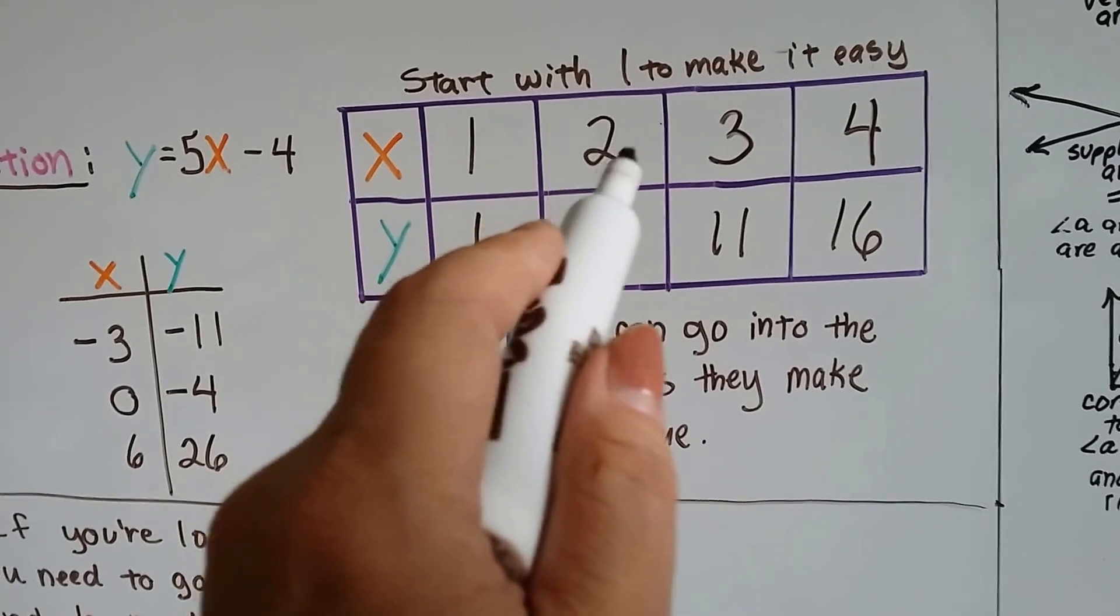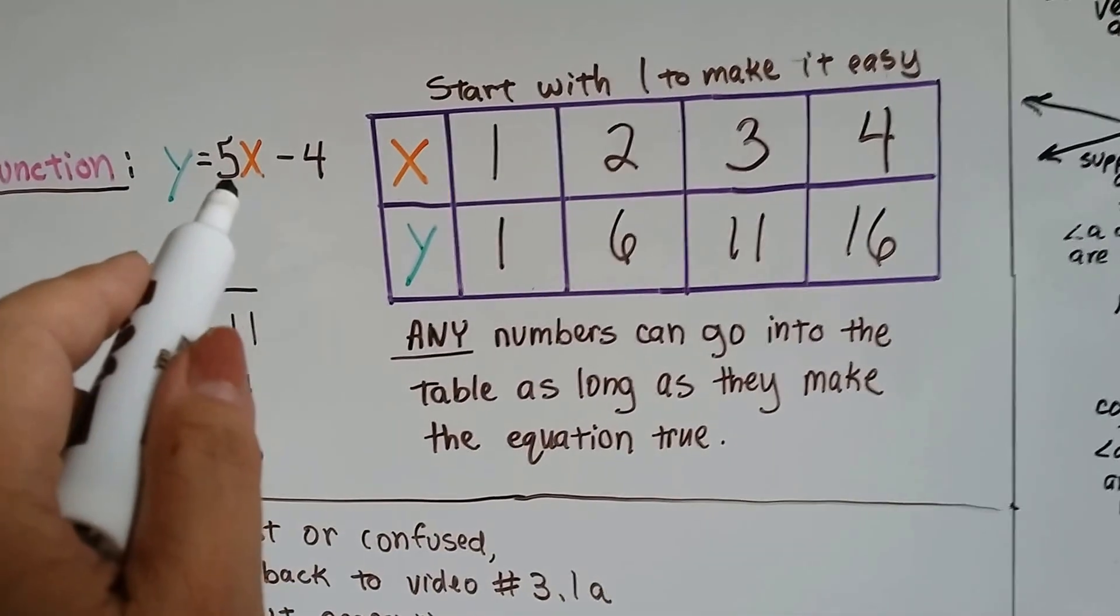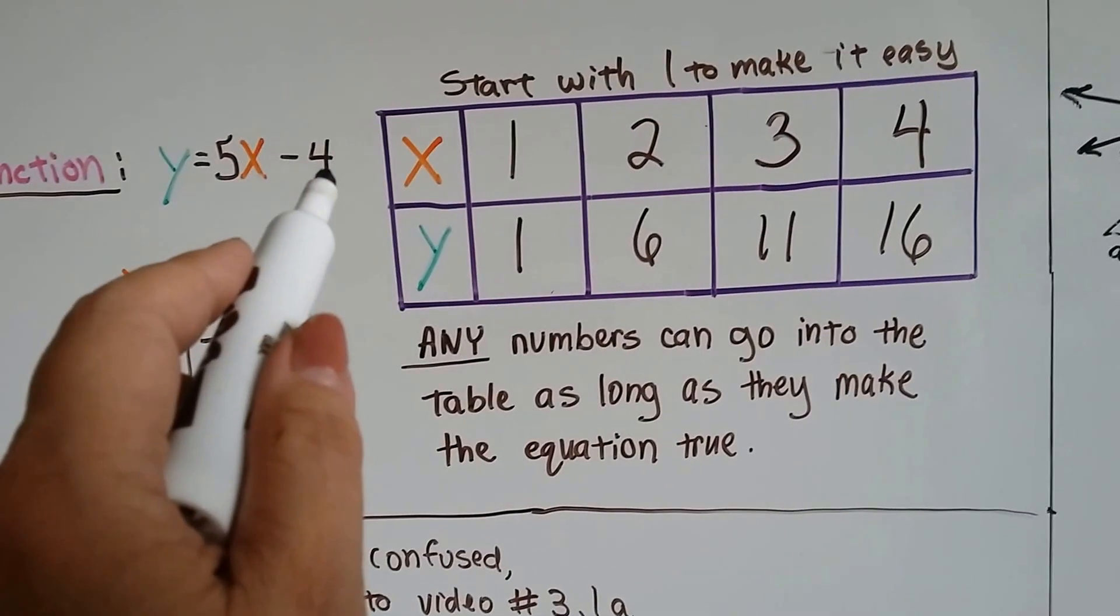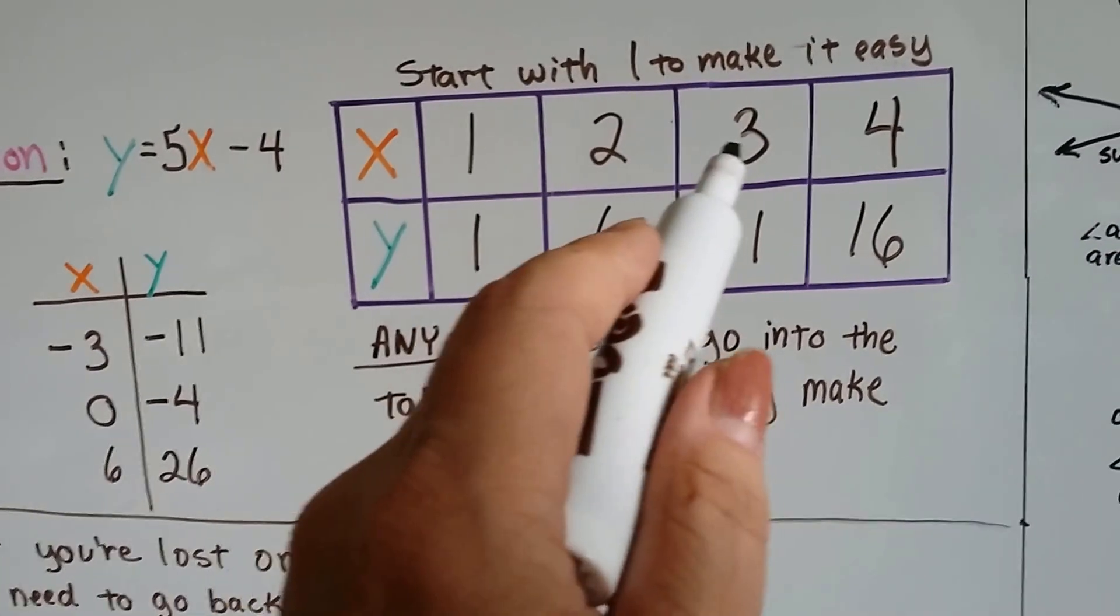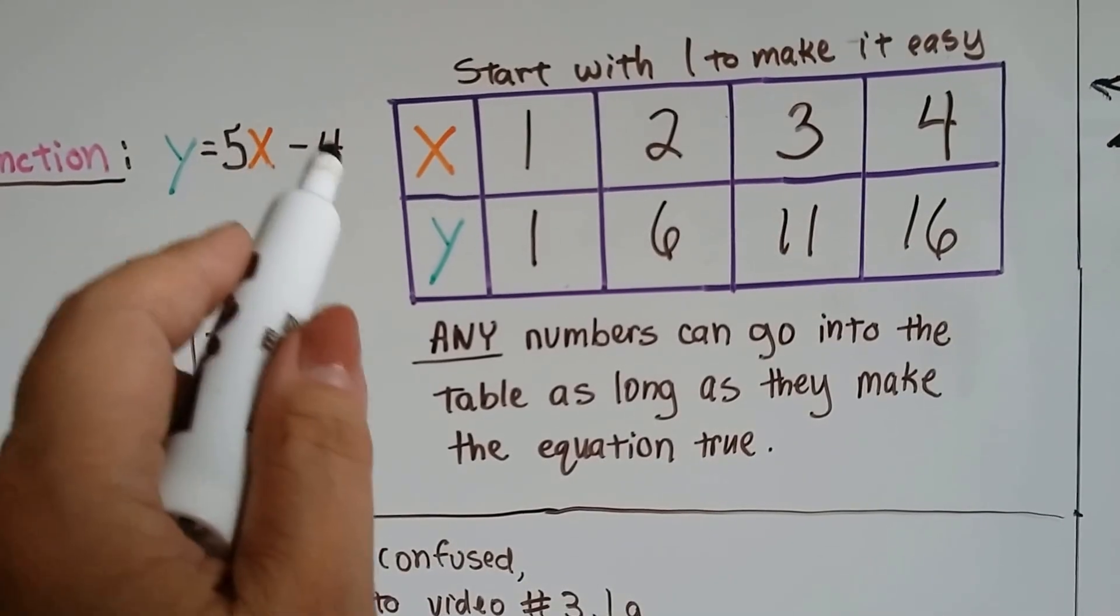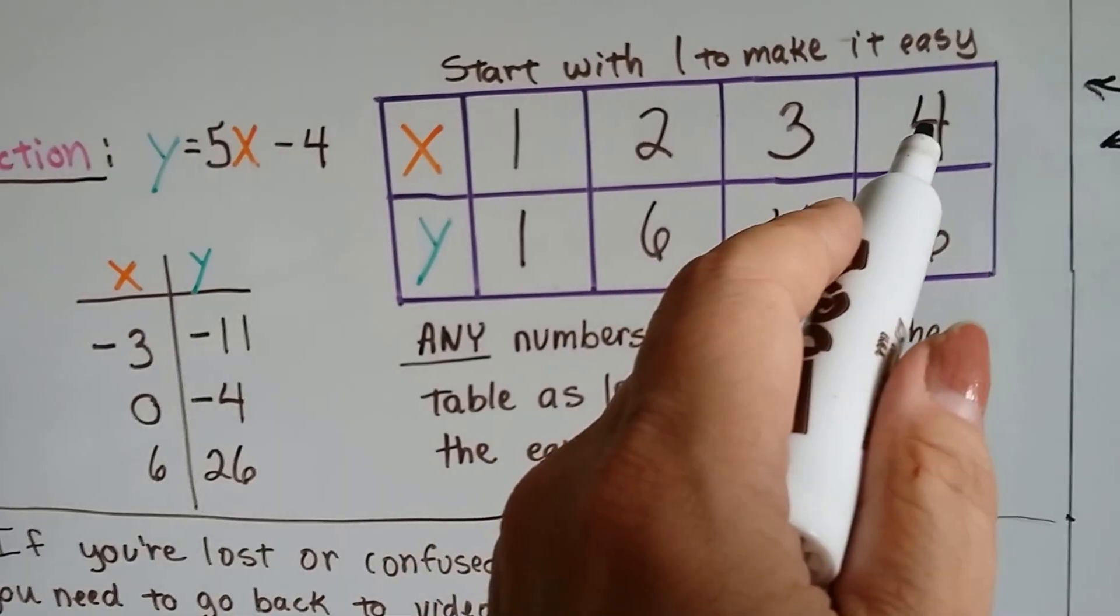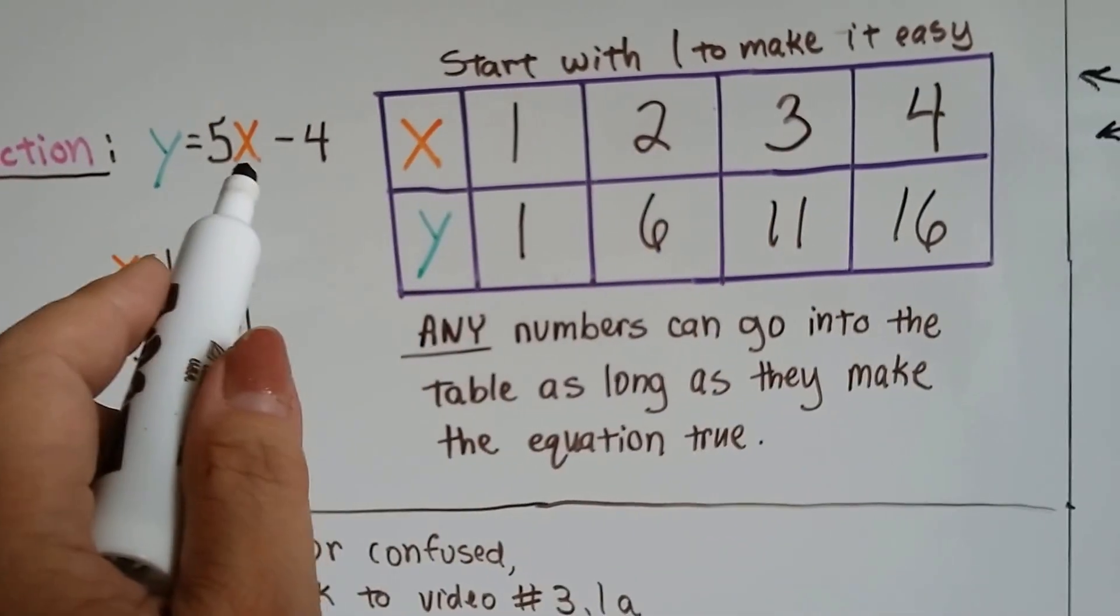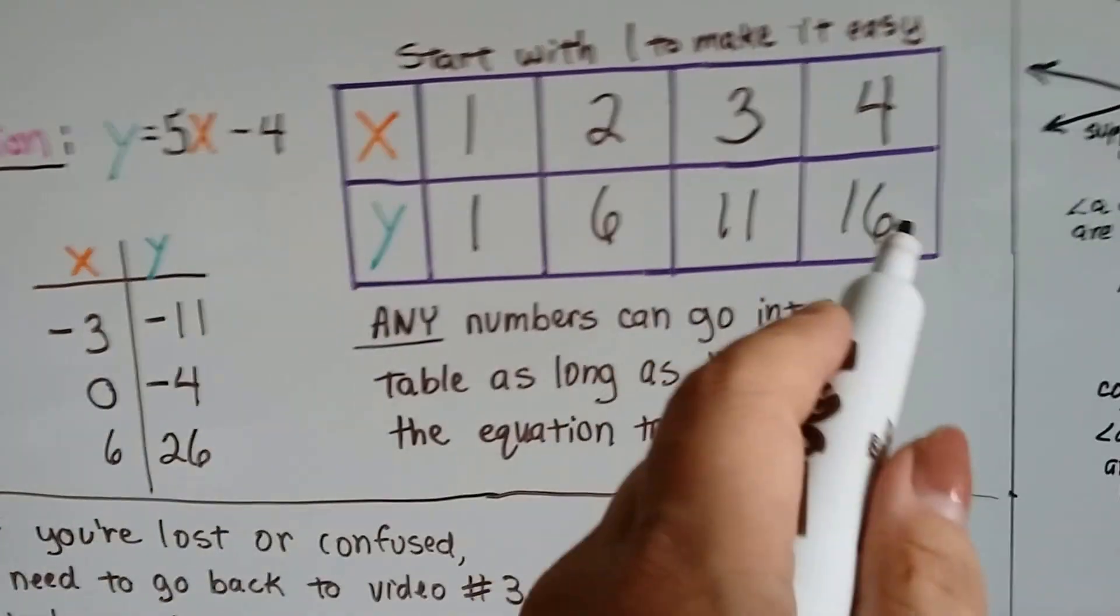If x is equal to 2, then that's 5 times 2 is 10, 10 minus 4 is 6, y equals 6. If x is equal to 3, then 5 times 3 is 15, minus 4 is 11. And if x is equal to 4, then that's 5 times 4 is 20, minus 4, that's 16. That's not hard, is it?